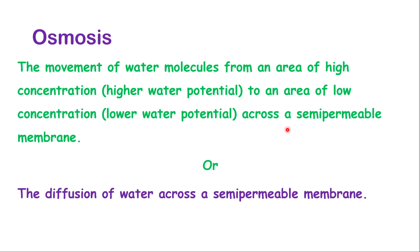Osmosis is the movement of water molecules from an area of high concentration — which we describe as higher water potential — to an area of low concentration, which we describe as lower water potential, and it must go across a semi-permeable membrane. Osmosis can also be defined as the diffusion of water across a semi-permeable membrane.